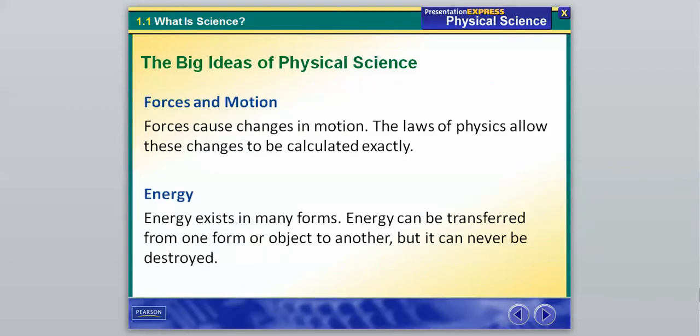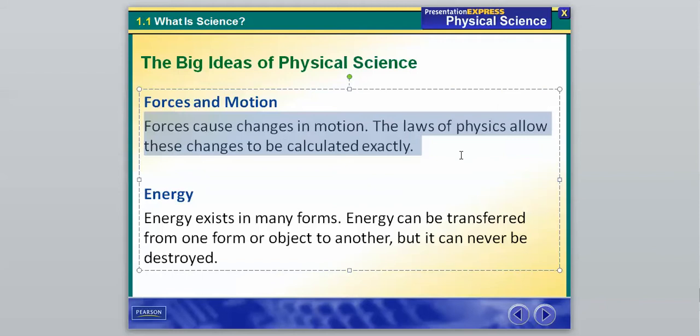And then our last two big ideas is that forces cause changes in motion, and the laws of physics allow these changes to be calculated exactly. So law, that's a big thing that shows something that's been proved over and over again. So the laws of physics are going to allow us to calculate how fast a pitcher with a certain body weight and certain arm speed can throw a fastball. All those things are going to be able to be calculated almost exactly.